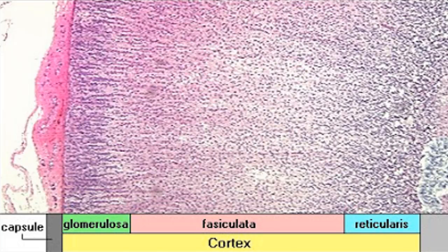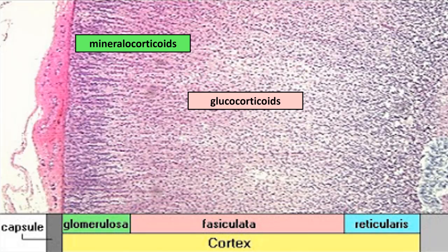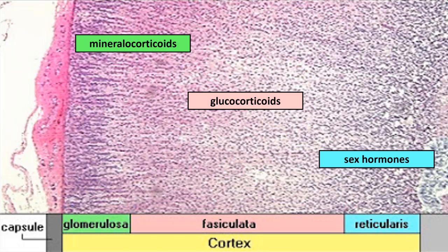The adrenal cortex has three layers called zona. Zona glomerulosa releases mineralocorticoids. Zona fasciculata releases glucocorticoids. The innermost zona releases sex hormones, mostly androgens.